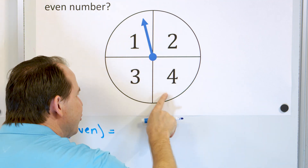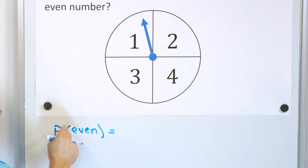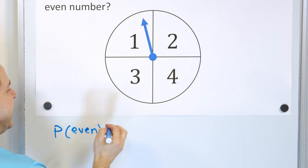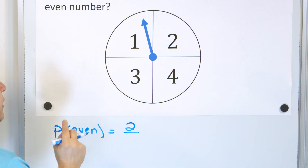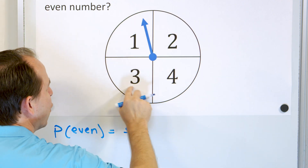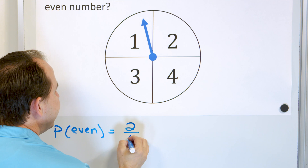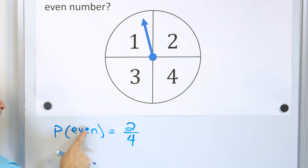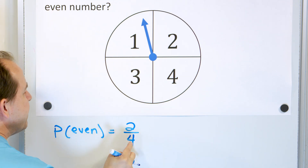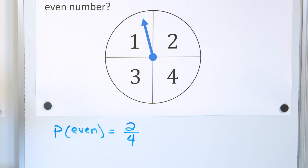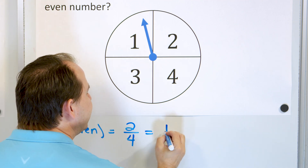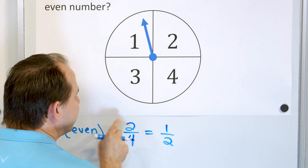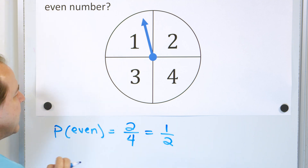There are two different positions I can land on to satisfy landing on an even number — two even numbers on the spinner, while the others are odd. So the answer is two positions out of four total. It's the same recipe every time: how many ways can I get what I'm looking for, divided by how many total positions? Two fourths reduces to one half.